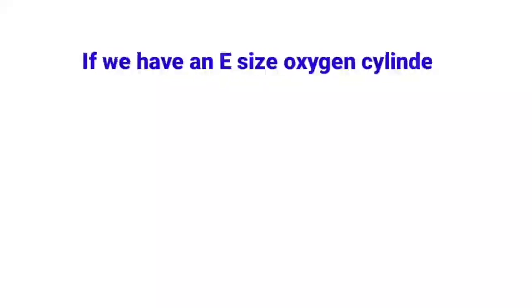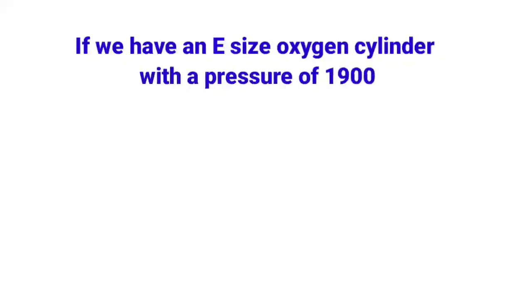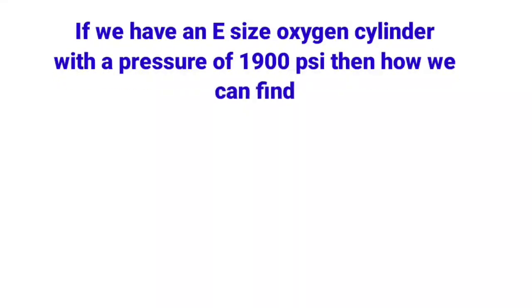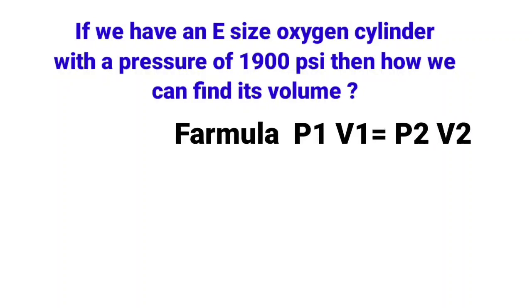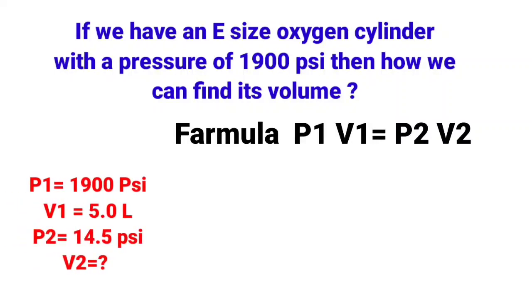For example, if we have an E-size oxygen cylinder with a pressure of 1900 psi, then how we can find its volume? Formula: P1 V1 is equal to P2 V2. P1 is 1900 psi, which is the pressure of the cylinder. V1 is 5.0 liters, it is the internal volume of E-size oxygen cylinder, it is constant.